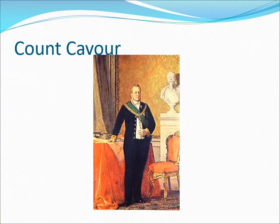Cavour decided to modernize Piedmont-Sardinia through reforms. He was pragmatic and opportunistic — going to do whatever was necessary to reach his goals. He used war to strengthen his position against Austria. In 1859, Cavour allied with France and went to war against Austria in the Austro-Italian War. By 1860, Austria was defeated and Piedmont-Sardinia had unified most of the Italian provinces.